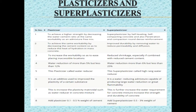The use of superplasticizers is practiced for production of flowing, self-leveling, self-compacting, tremi-concreting, and for the production of high strength and high performance concrete. Superplasticizers are more powerful as dispersing agents and are called high range water reducers in American literature. The use of superplasticizers has made it possible to reduce the water-cement ratio as low as 0.25 or even lower, and yet make flowing concrete to obtain strength of 120 MPa or more.